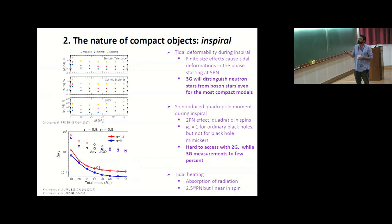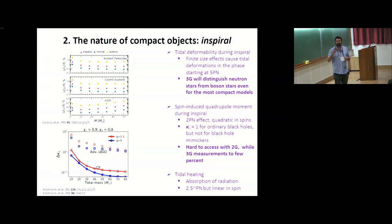The first way of searching for evidence for alternatives to black holes is by looking at the in-spiral. When two objects get close together, suppose they were ordinary neutron stars, then we know they undergo tidal deformability. But also for these exotic objects, you might get tidal deformabilities. The pre-factor goes like the inverse compactness to the fifth power and can therefore be a rather large number. In this case, 3G detectors will be able to distinguish neutron stars from boson stars.